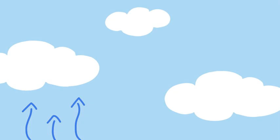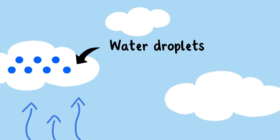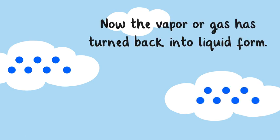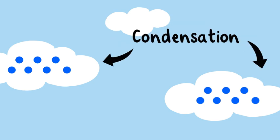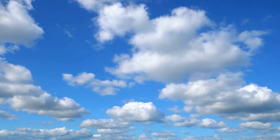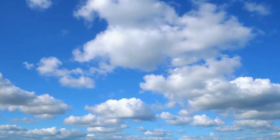The cold air causes the water vapor to condense into clouds and water droplets. Now the vapor or gas has turned back into a liquid form. This part of the water cycle is called condensation. Condensation is what makes clouds form.